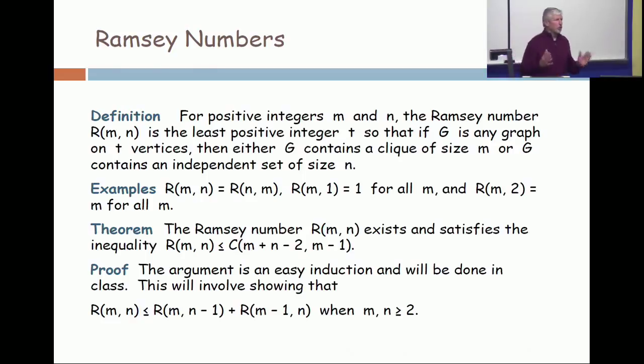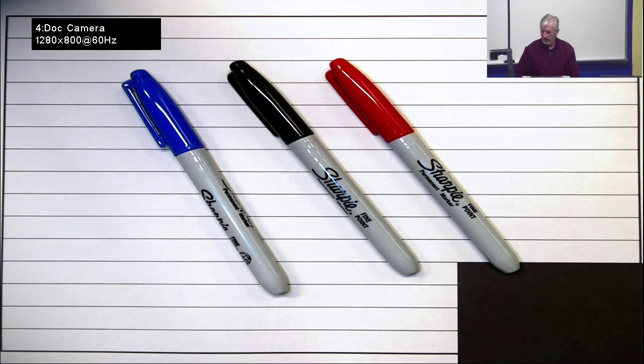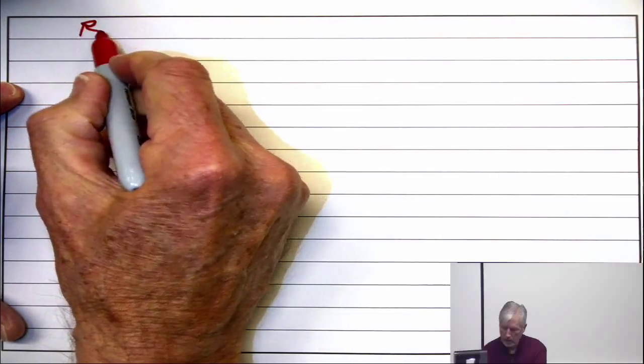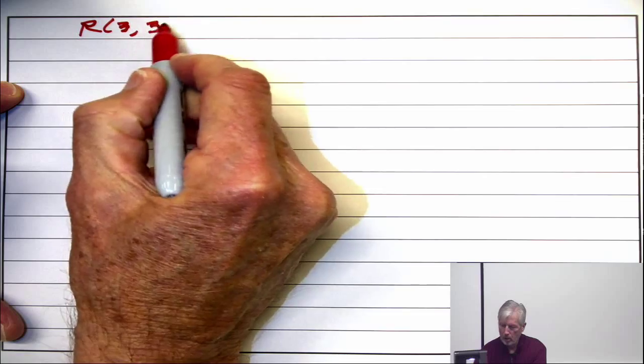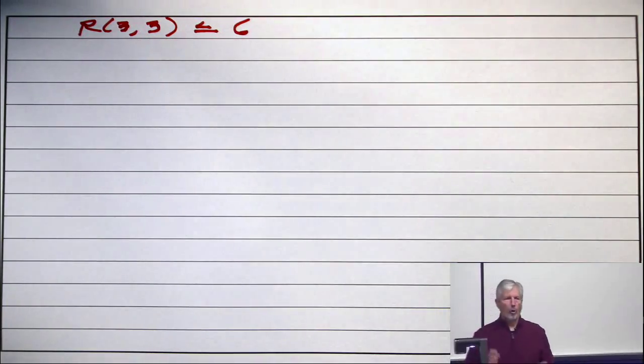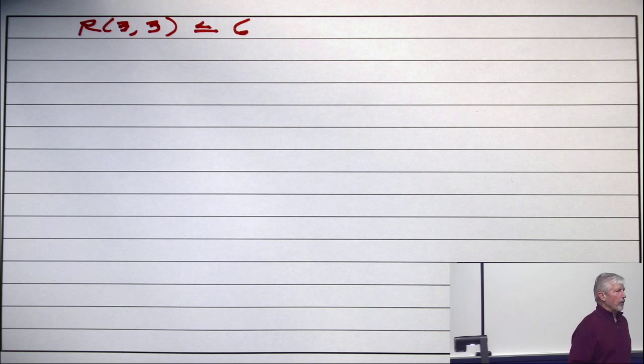The first non-trivial question is whether there is a number R(3,3). Is there some number so that if you have a graph that's that big, it either contains a K3 or an I3? And I'm going to show you that R(3,3) exists and is 6. All right. So first, why is R(3,3) less than or equal to 6? So what am I saying? Every graph which has 6 vertices has either a K3 or an I3.